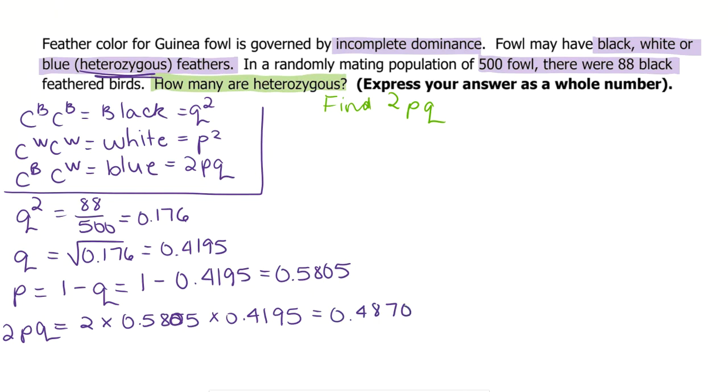Now check back, they asked how many are heterozygous, and we want to know that as a whole number. So for how many, we multiply our frequency by the total number in the population, which is 500, to get 243.5. But we want it as a whole number, so we are going to round that to 244 guinea fowl are heterozygous. And we're done.